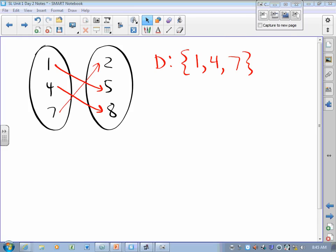The range is the set of outputs, the numbers that have an arrow headed toward them: {2, 5, 8}.